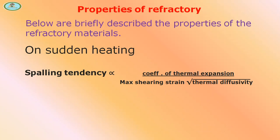On sudden heating, spalling tendency is proportional to the coefficient of thermal expansion divided by maximum tensile strength, multiplied by the square root of thermal diffusivity. On sudden cooling, spalling tendency is proportional to the coefficient of thermal expansion divided by maximum tensile strength, multiplied by the square root of thermal diffusivity.